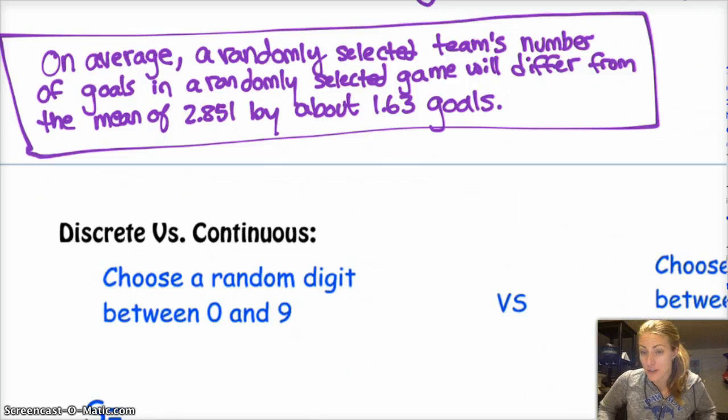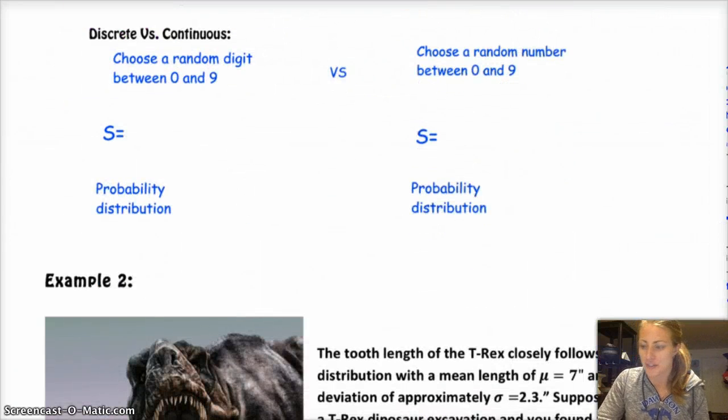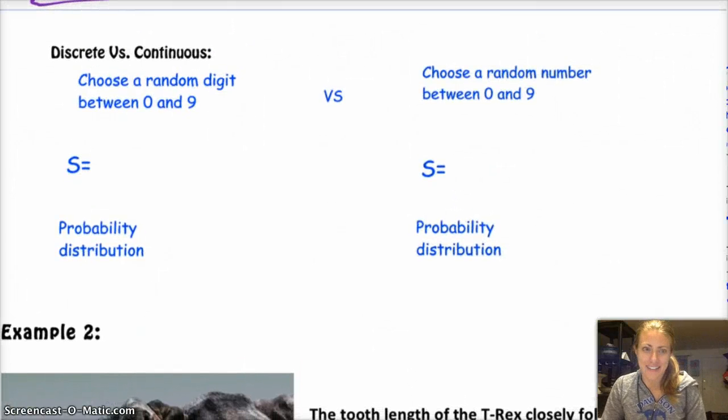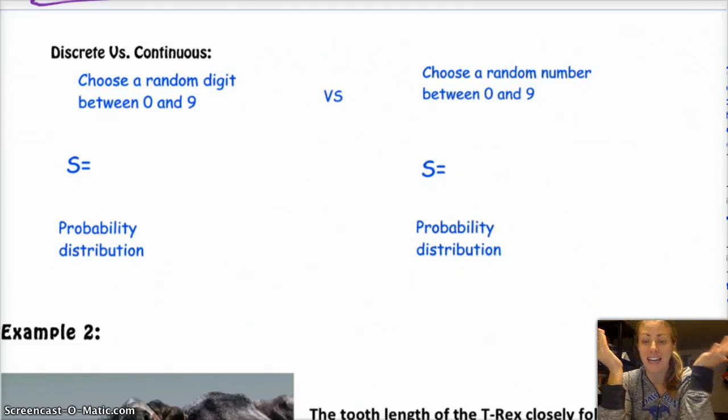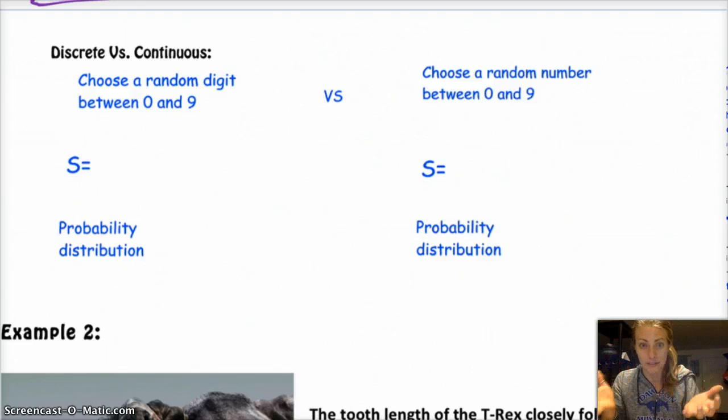So now we're going to move on to compare discrete versus continuous distributions. So I have two examples here, and also dinosaur later, of discrete versus continuous. But similar situations, right? A discrete chance outcome or event is the word that I wanted, is choose a random digit between 0 and 9. Random digit means my options are 0, 1, 2, 3, 4, 5, 6, 7, 8, 9, not 8.5 or 0.001, right? Discrete means I have like cut and dry options, like black and white.